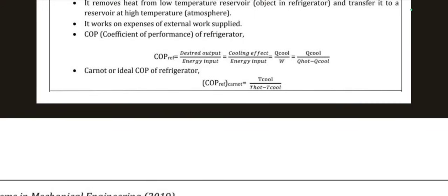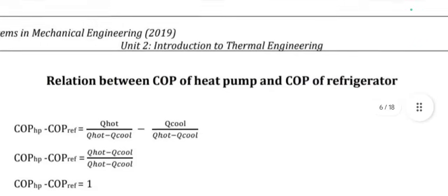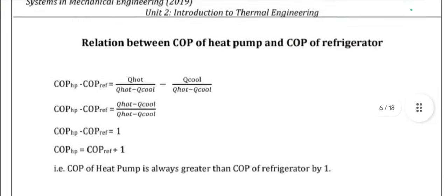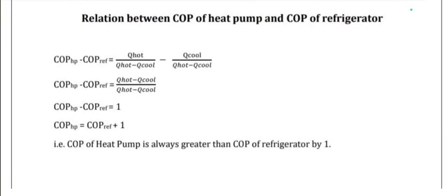In heat pump COP it was Q1/(Q1−Q2), and in refrigerator it is Q2/(Q1−Q2). The relation between COP of heat pump and COP of refrigerator: COP_HP − COP_R = Q1/(Q1−Q2) − Q2/(Q1−Q2) = (Q1−Q2)/(Q1−Q2) = 1. Therefore, COP of heat pump = COP of refrigerator + 1, meaning the COP of a heat pump is always greater than the COP of a refrigerator by 1.